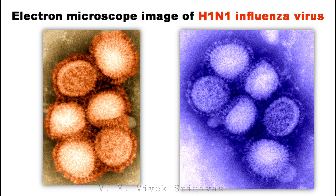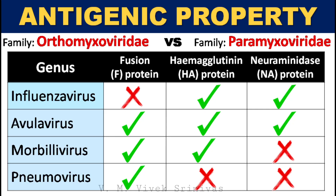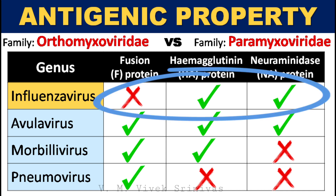The picture shown here is the electron microscope image of H1N1 influenza virus. Antigenic property: In contrast with the family paramyxoviridae viruses, the influenza virus does not possess fusion protein. It possesses only hemagglutinin and neuraminidase.